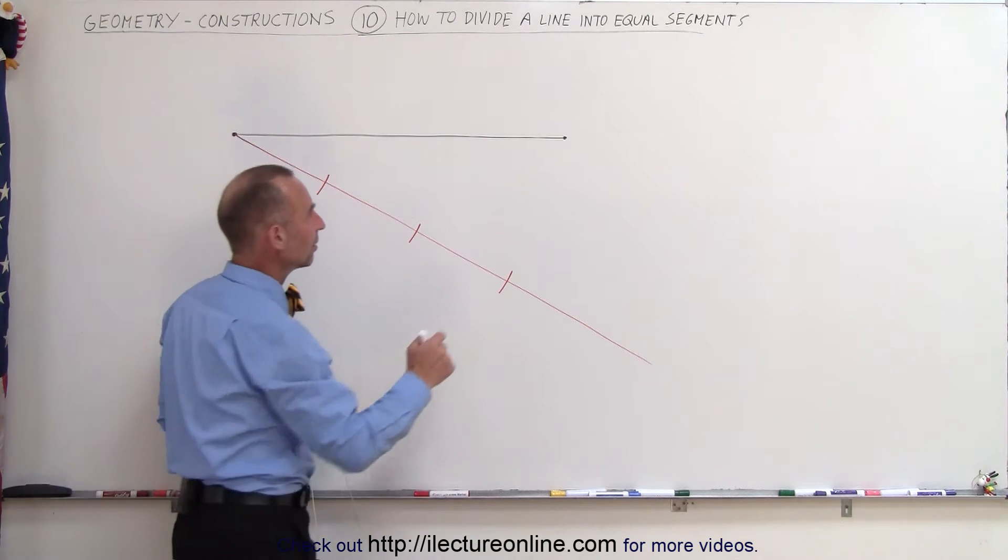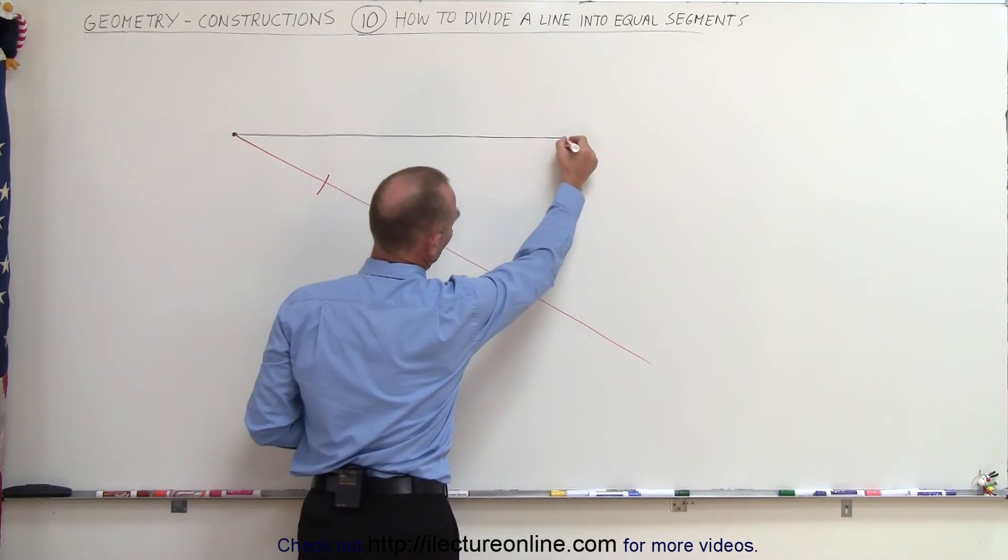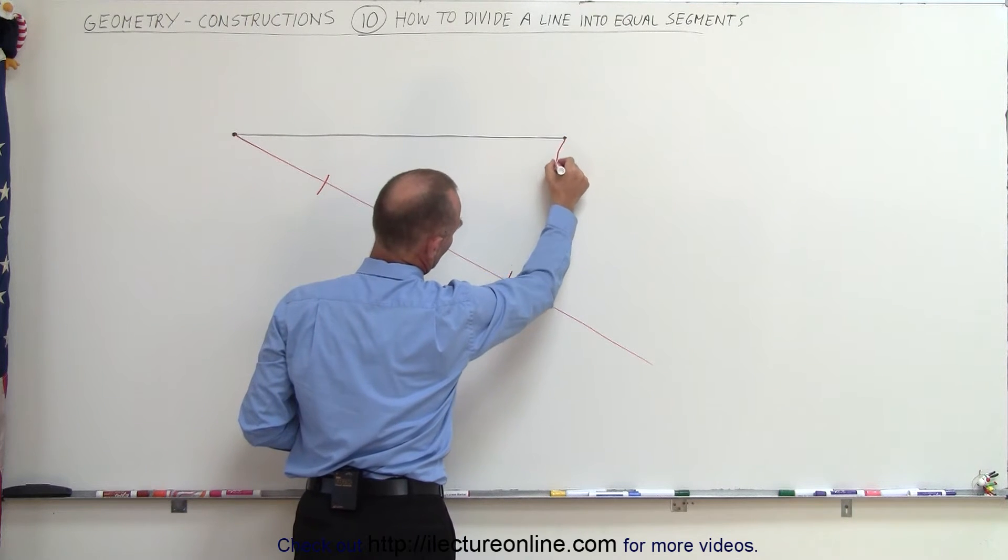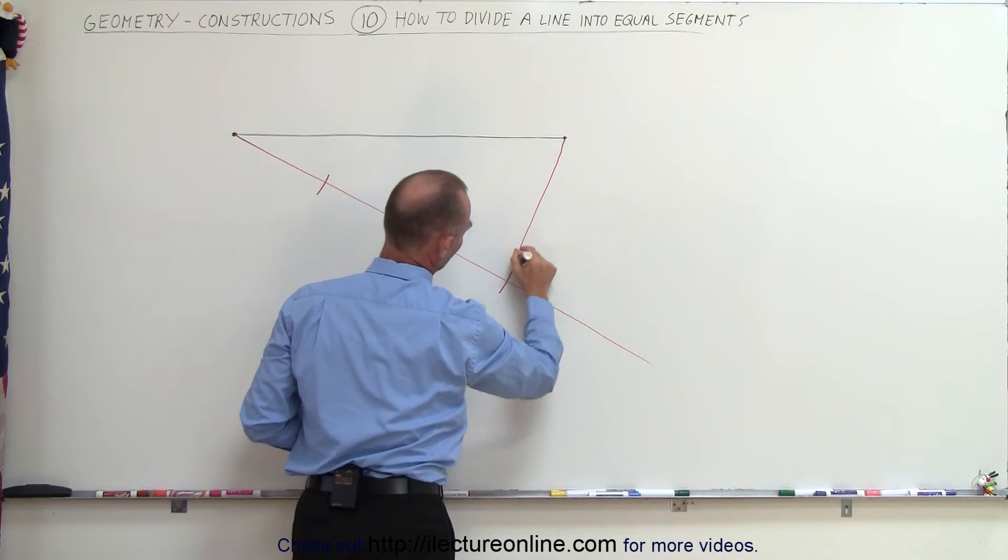Next we're going to draw a line from the second point down to where the third tick mark is right here. So let's draw a straight line here. There we go, there's our line.